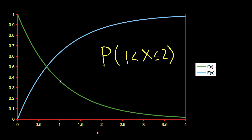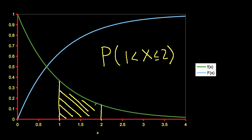So in terms of the probability density function, this would be the integral from 1 to 2 of the density function. Conceptually, this is the area under the density function between 1 and 2, and if you want to, you can actually work that integral.